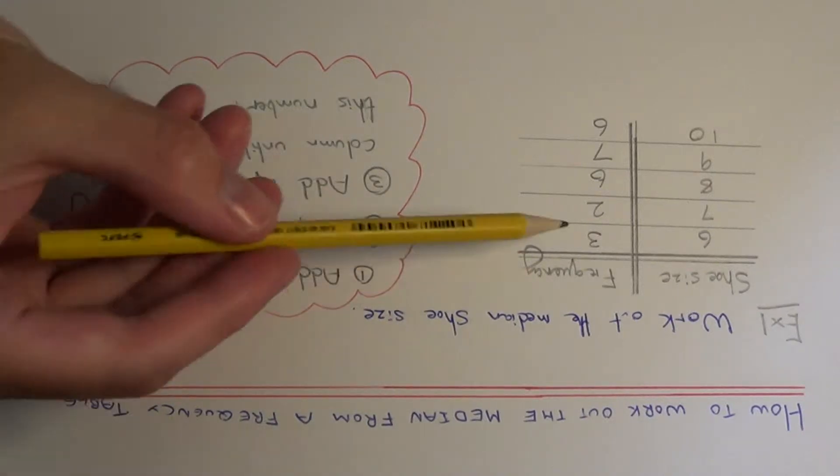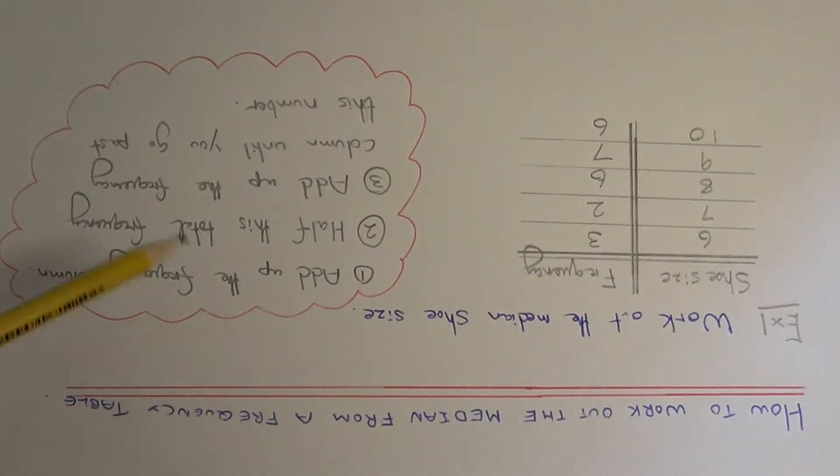Step one, we need to add up the frequency column and then we need to half this total frequency that we've just found. Then what we need to do is add up the frequency column again until we go past this number which we've just got in step two.